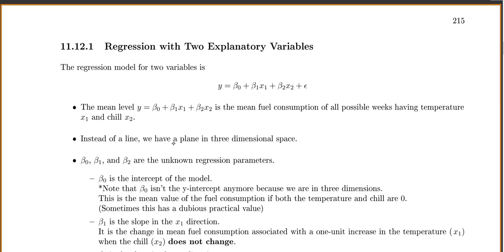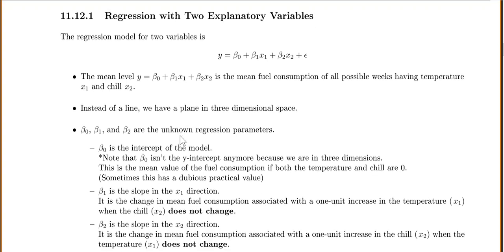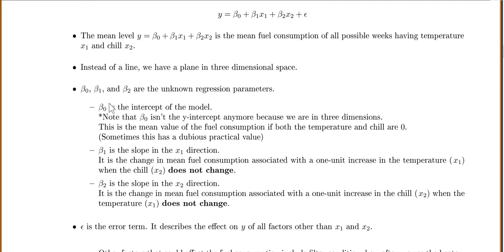Now, instead of a line, because we have now three variables, we have a plane in three-dimensional space. And our beta 0, beta 1, and beta 2 are our population parameters that we don't know yet. Or I should say, we never truly know because that's for our entire population. So beta 0 is the intercept in the model. Notice I don't actually say the y-intercept anymore because we're in three dimensions.